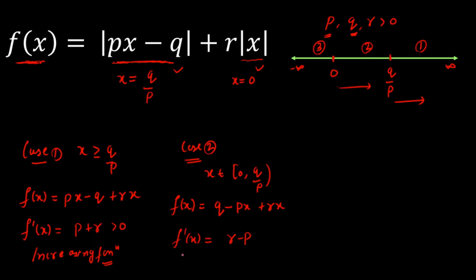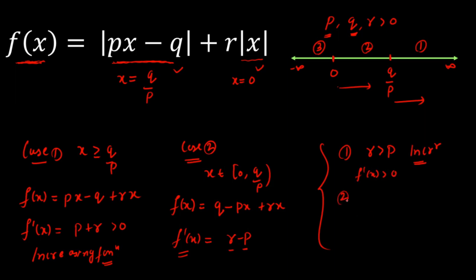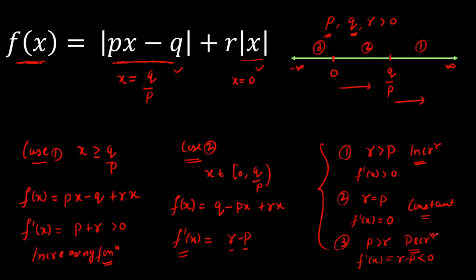In case two, there are three sub-cases. First, if r is greater than p, then r minus p is positive, so f'(x) is greater than zero — the function is increasing. Second, if r equals p, then f'(x) equals zero — the function is constant. Third, if p is greater than r, then r minus p is less than zero — the function is decreasing.